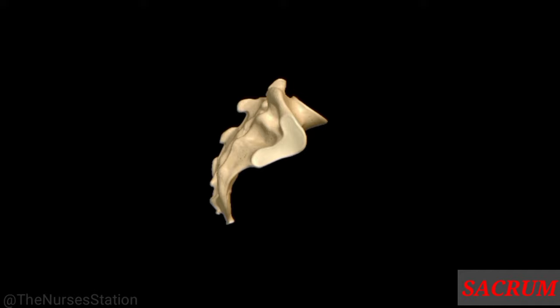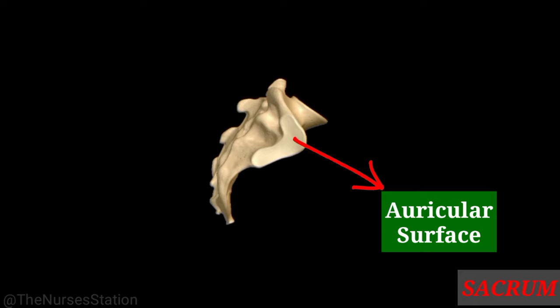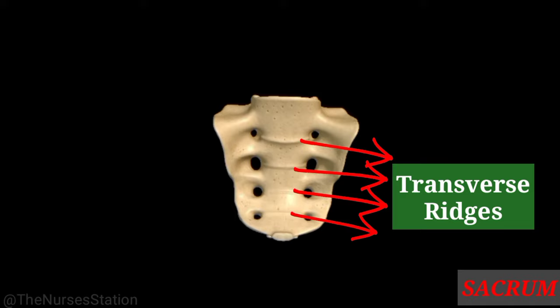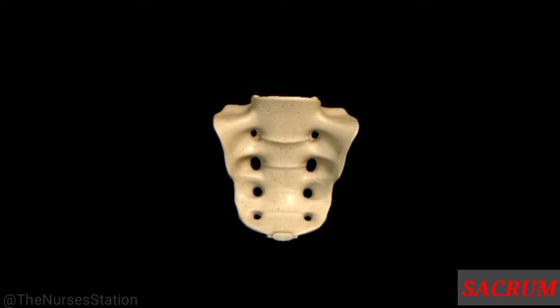On both lateral surfaces, the sacrum has a large ear-shaped auricular surface that articulates with the ileum of each hip bone to form the sacroiliac joint, which is the strongest joint in the human body. The concave anterior side of the sacrum faces the pelvic cavity and contains four transverse lines or ridges that mark the joining of the sacral vertebral bodies.